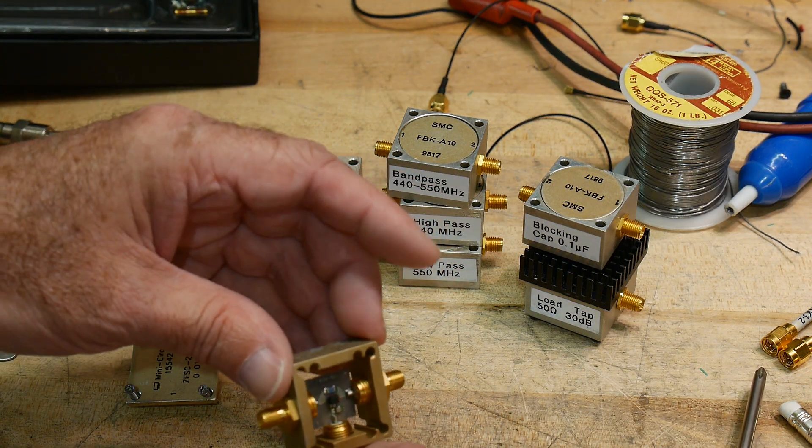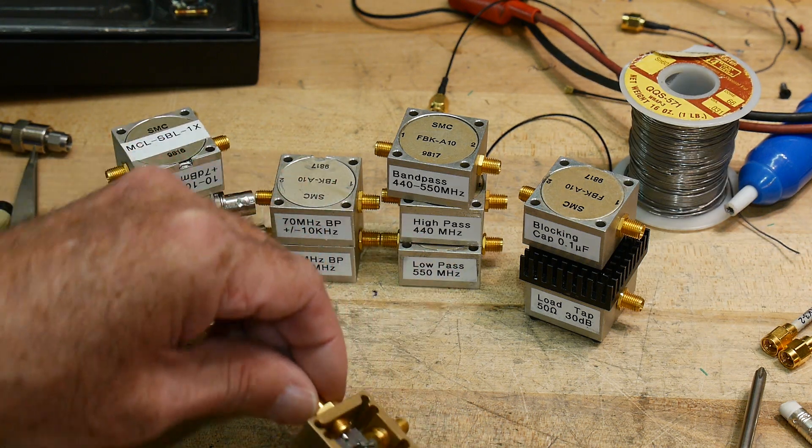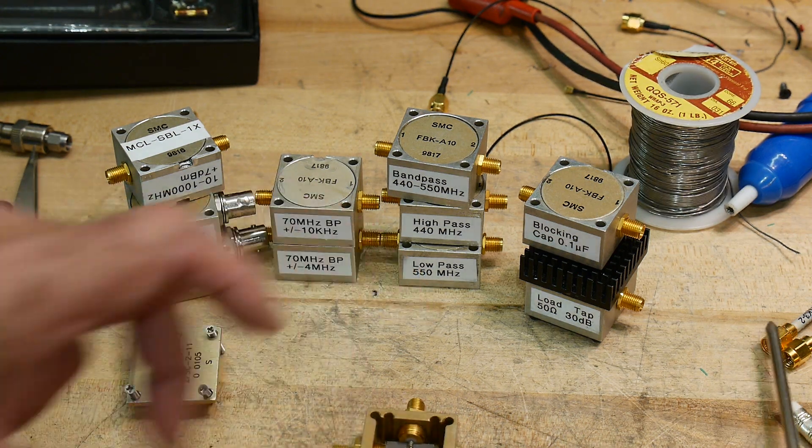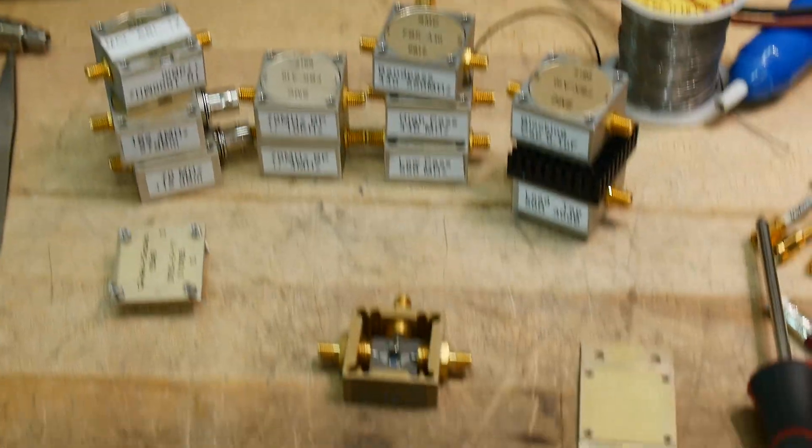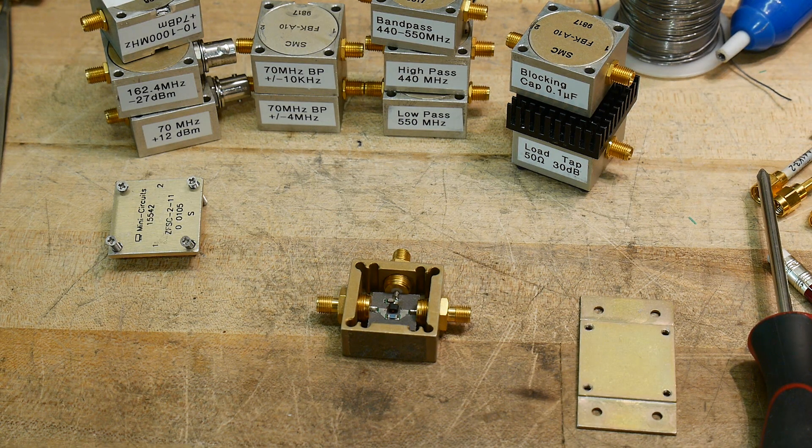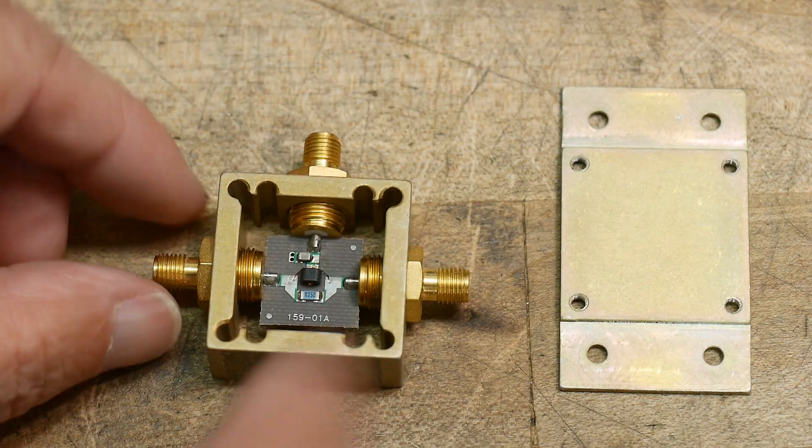Ah, this one has a transformer. So it's not just a resistive splitter. It actually has a transformer inside. So let me zoom in on that. All right. Here we go.